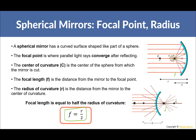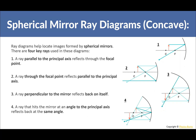Now let's talk about drawing ray diagrams to see where images form. We'll start with concave mirrors. Ray diagrams use four key rays, and you only need two of them. The first ray: a ray parallel to the principal axis reflects through the focal point. So from the top of the object, go straight across, and it reflects through the focal point.